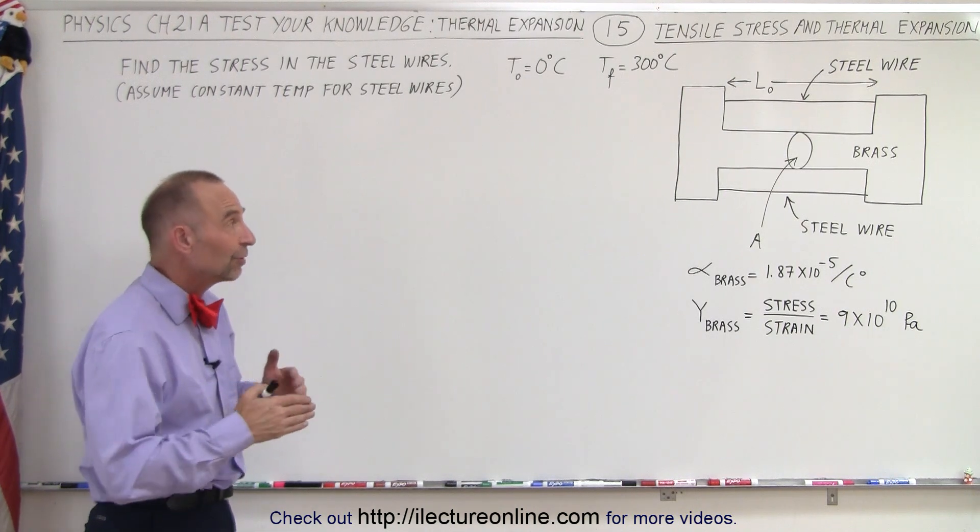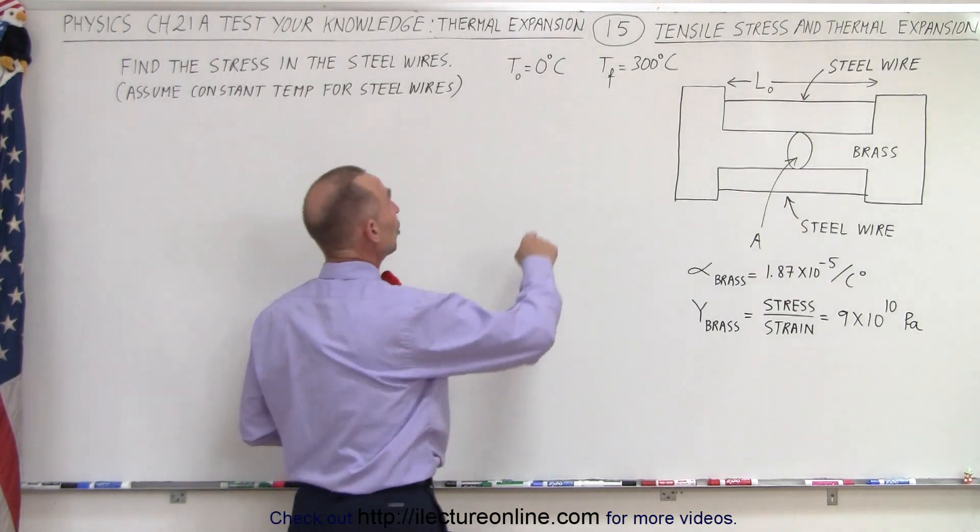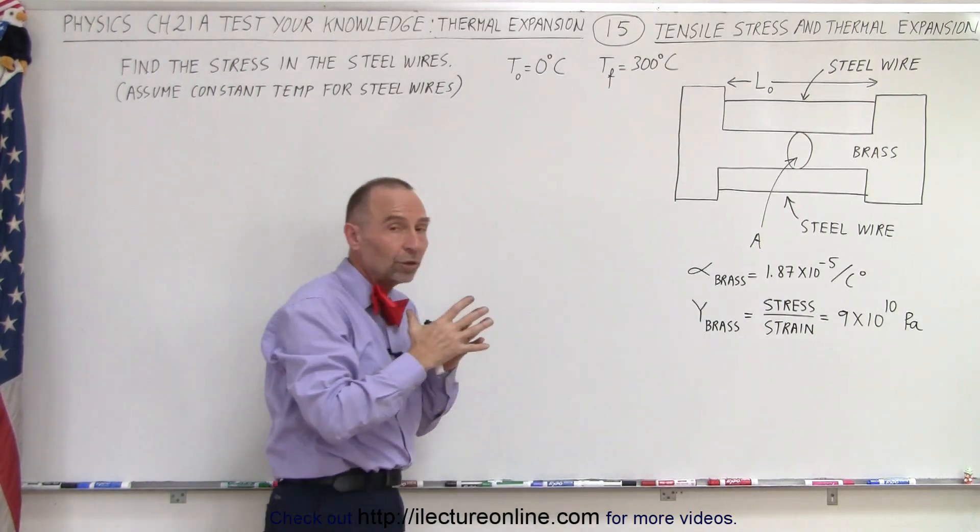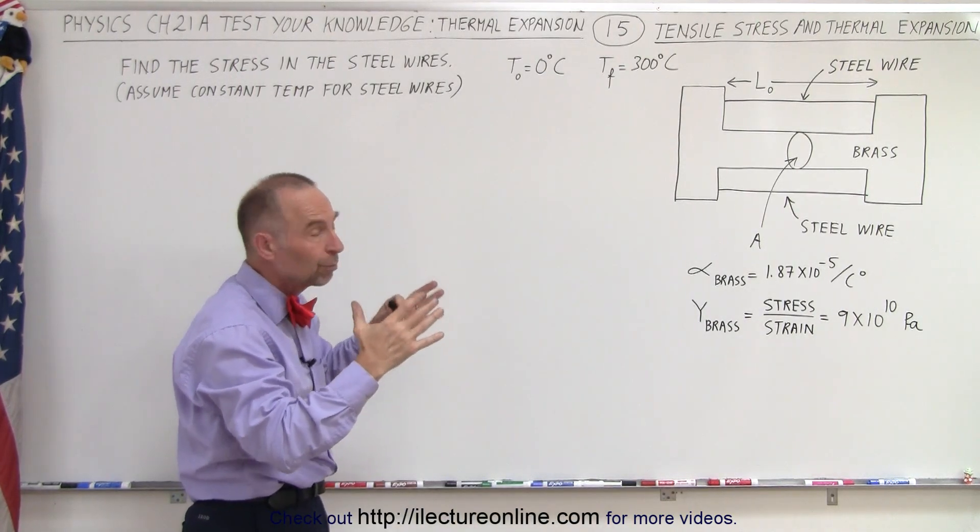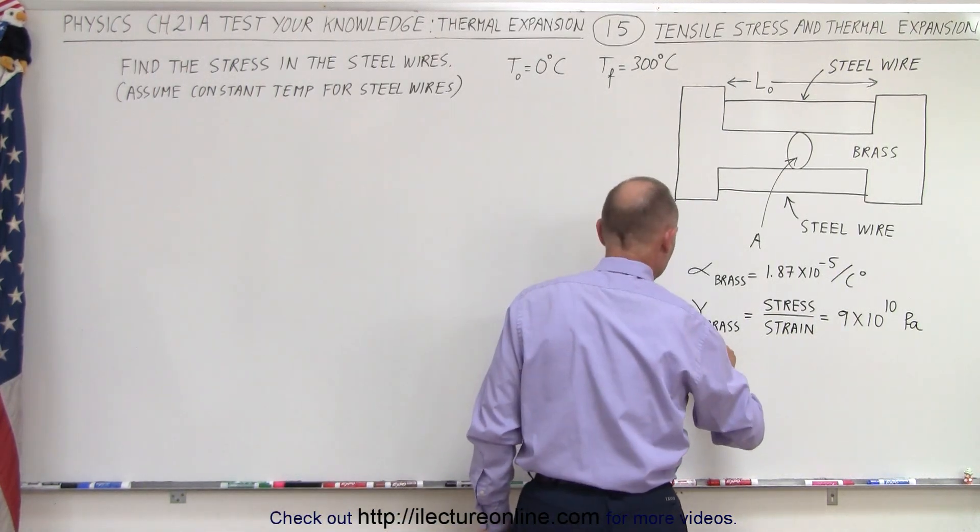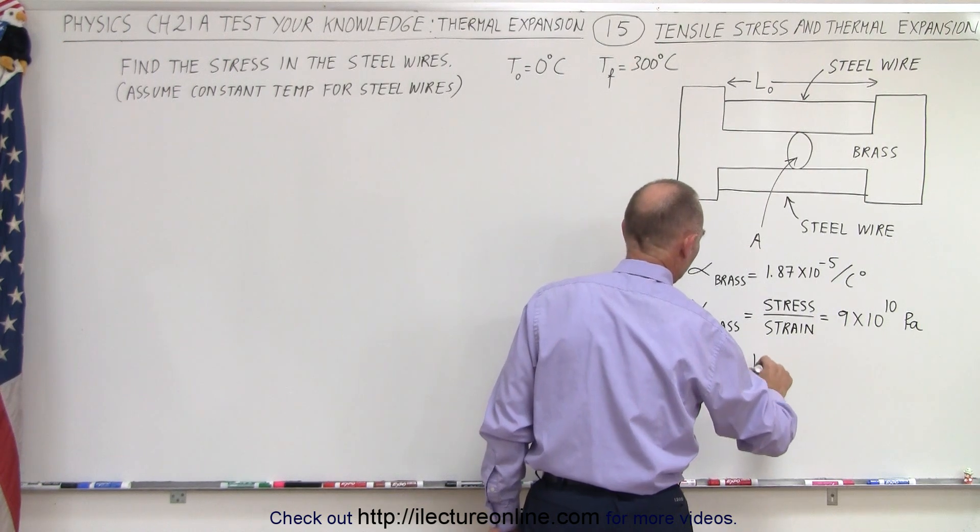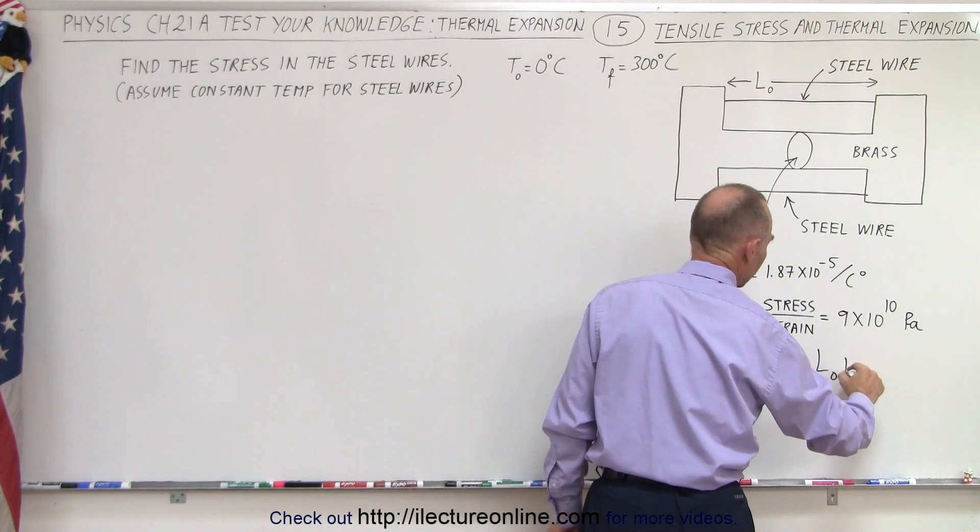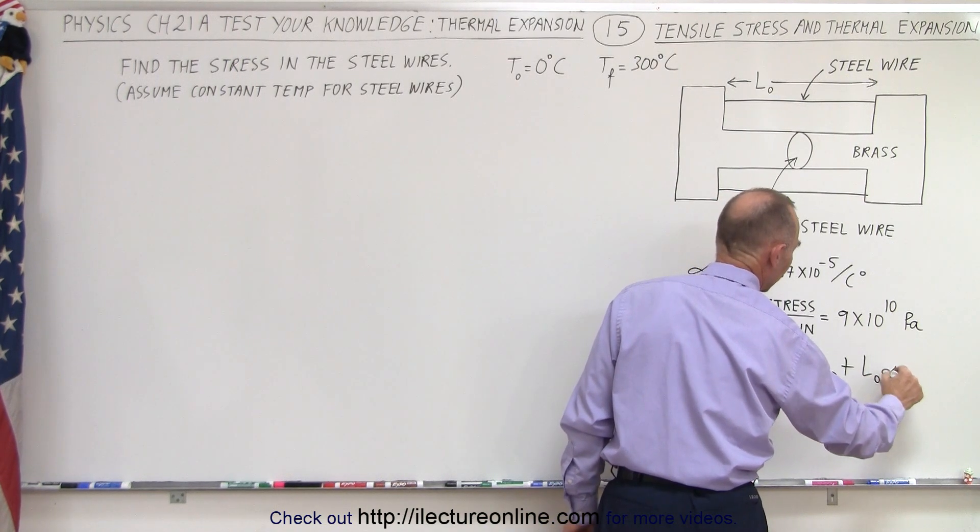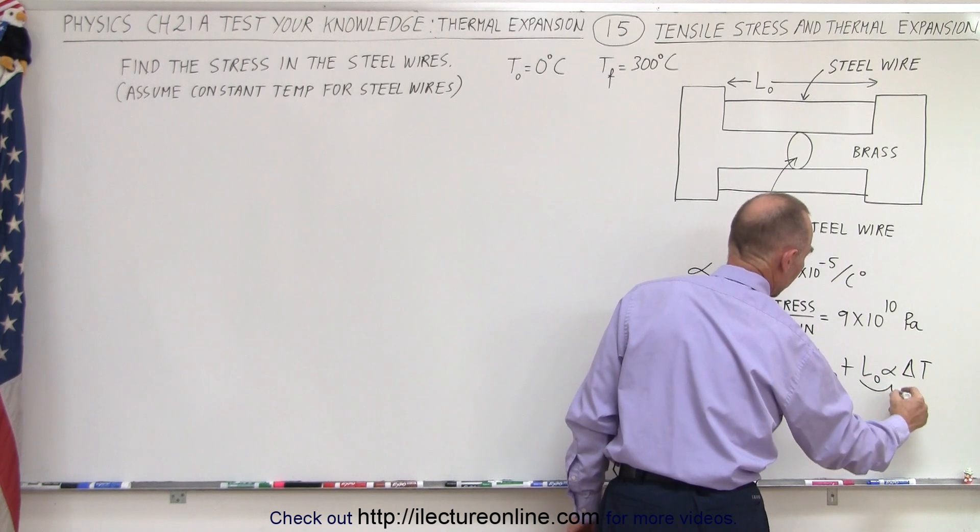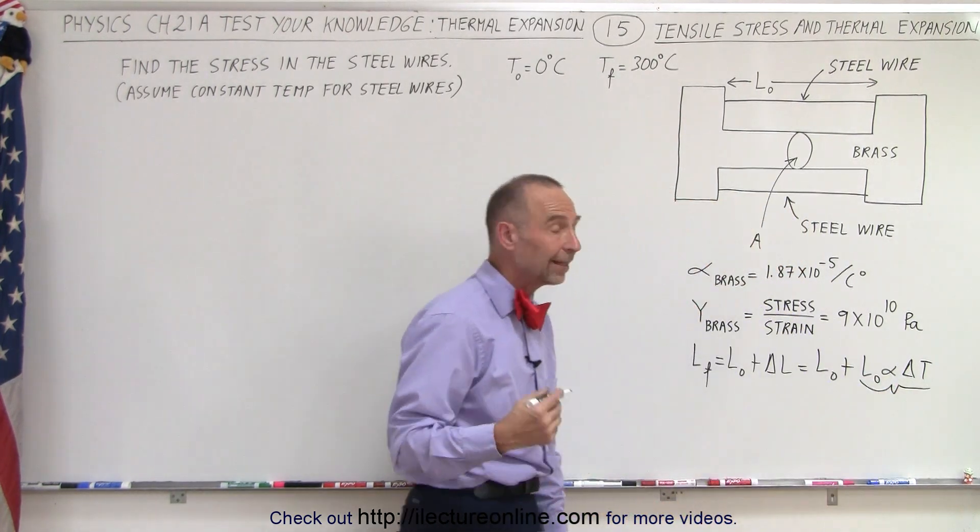The first thing we're going to do is figure out when the temperature changes from zero degrees centigrade to 300 degrees centigrade, how much will the length of that brass bar increase? So we know that the length final equals the original length plus the change in the length. So that would be equal to the original length plus the original length times the coefficient of heat expansion times the change in the temperature. So this here is the change in the length.